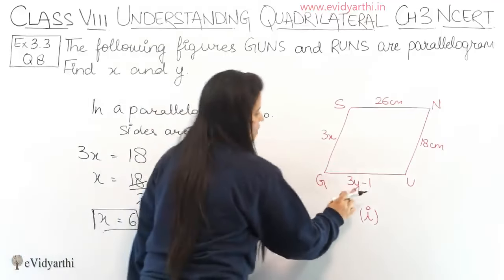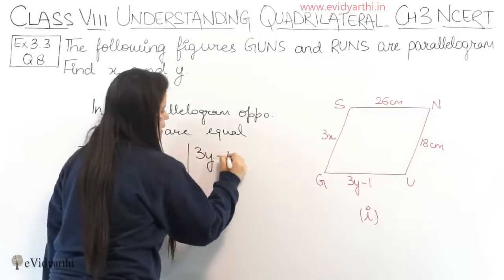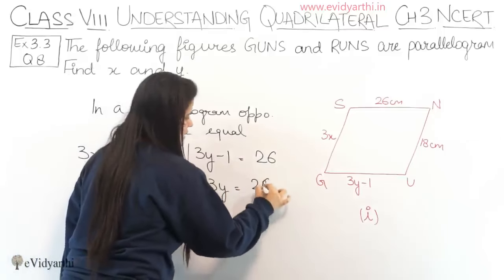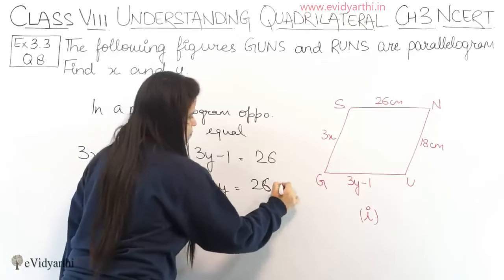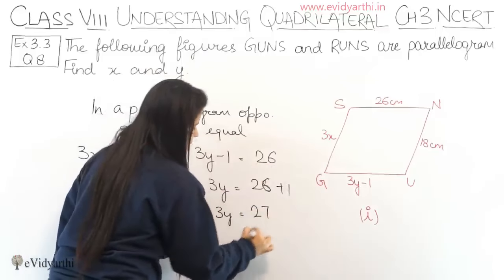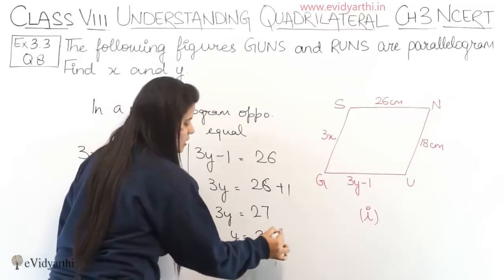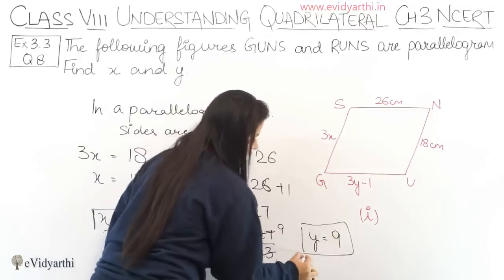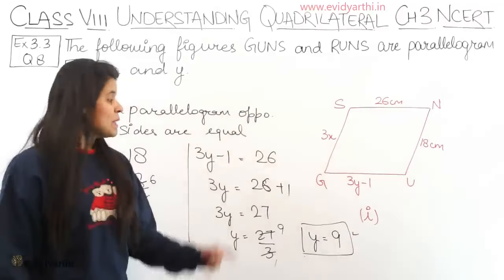Similarly, 3Y minus 1 and 26 are opposite sides, so they are equal. We write 3Y minus 1 equals 26. So 3Y equals 26 plus 1, which gives 3Y equals 27. Therefore Y equals 27 divided by 3, which is 9. So for part 1, X equals 6 and Y equals 9.